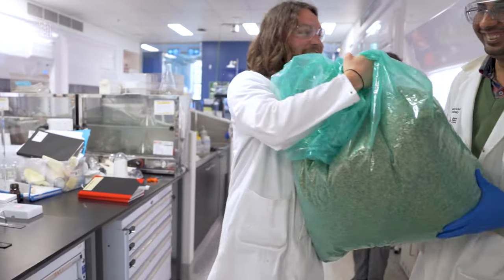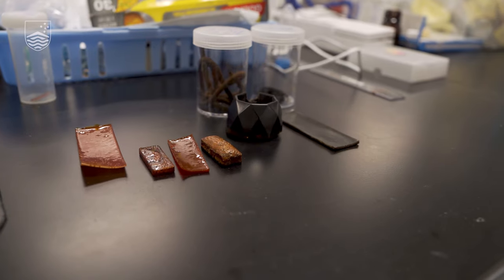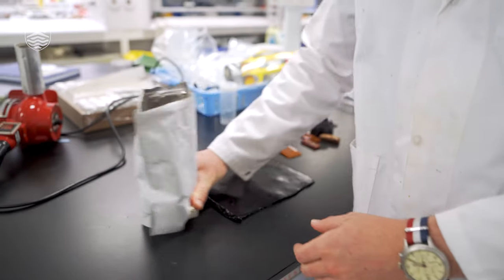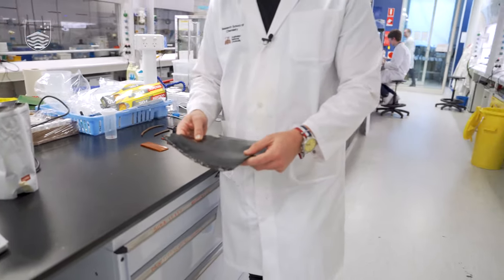We start with straight waste coffee grounds from a cafe and then incorporate them with our chemistry into the material up to 30% by weight to make the coffee key plastic.